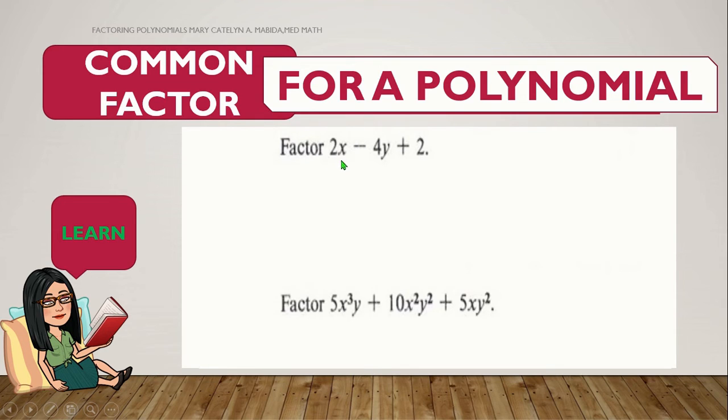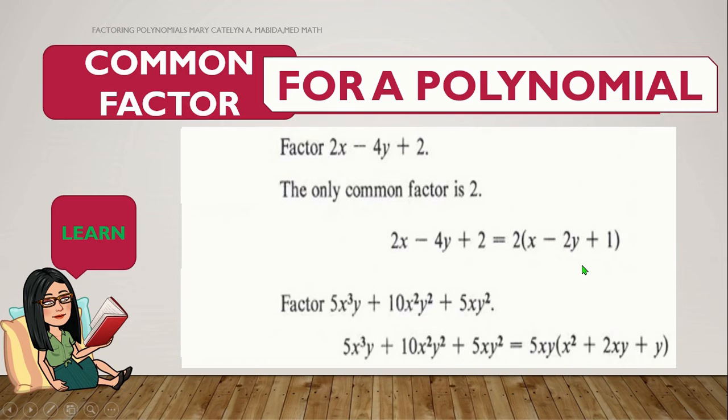Factor 2x minus 4y plus 2. What is their common factor? You are right. It's only 2. So, we are going to divide. 2x divided by 2 is x. Negative 4y divided by 2 is negative 2y. 2 divided by 2 is 1. And there you go.